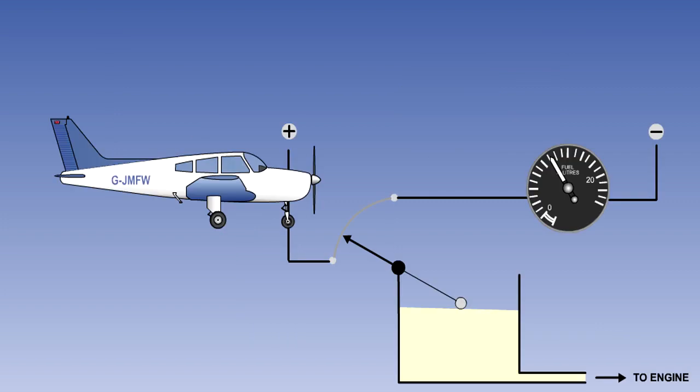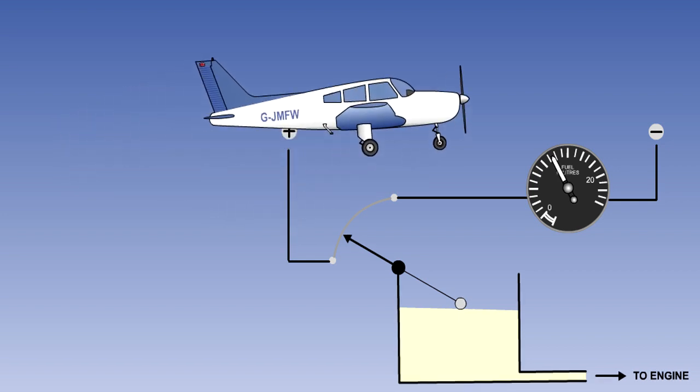This system is normally restricted to light aircraft. It has two major drawbacks. Firstly, it is subject to maneuvering error. That is to say, as the aircraft's attitude changes, the indicated fuel quantity will change.